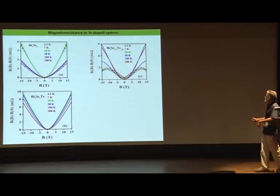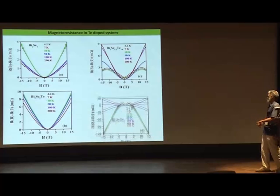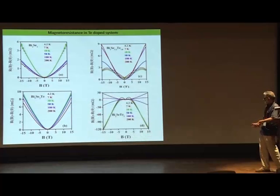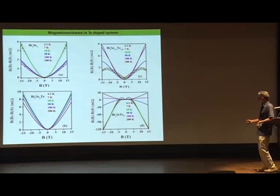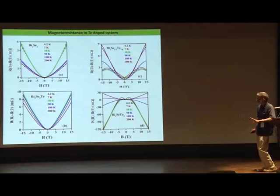This is in Bi₂Se₃ with tellurium content 1.8, and this is the magneto resistance for the sample with tellurium content 2. Why does this happen, and how can we understand this very different behavior of magneto resistance as you change the tellurium content?